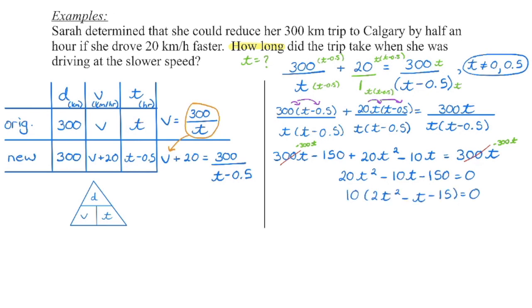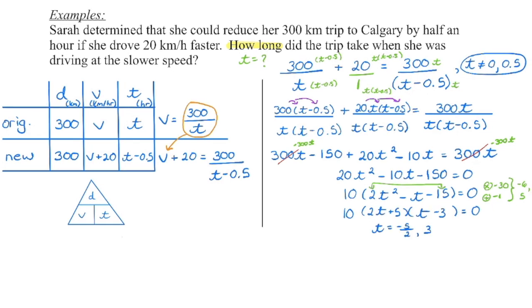We multiply the values of A and C together: 2 times negative 15 is negative 30, and our B value is negative 1. We ask: are there two numbers that multiply to negative 30 and add to negative 1? Those are negative 6 and positive 5. So we can factor this. Setting up our binomials: our first terms multiply to 2T squared. Then 2T times negative 3 gives us negative 6, and 1 times 5 gives us 5. Setting each factor equal to zero gives us the value of T.